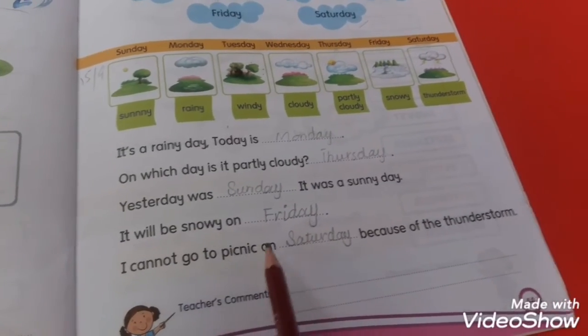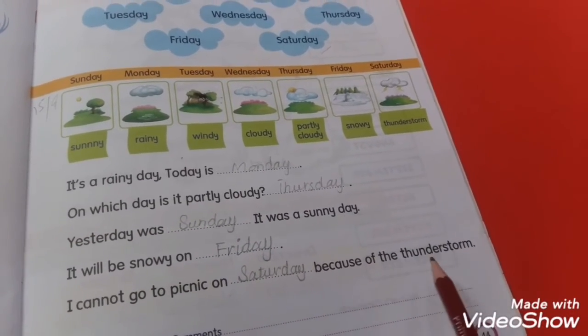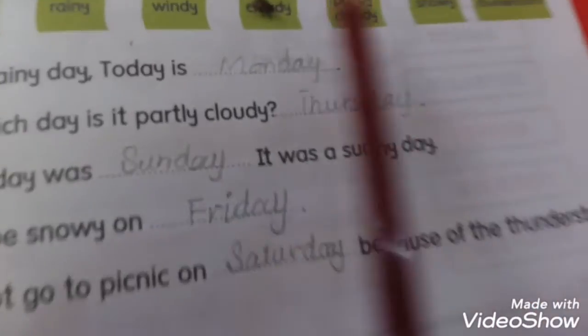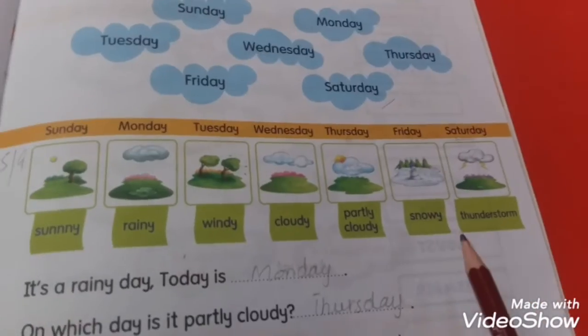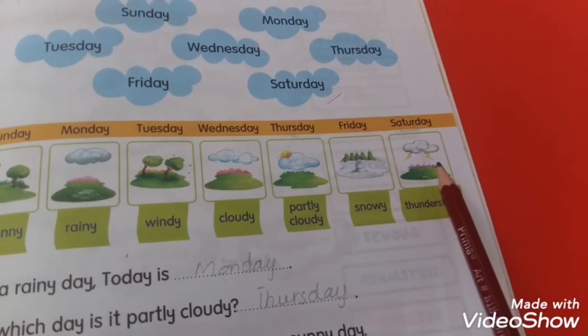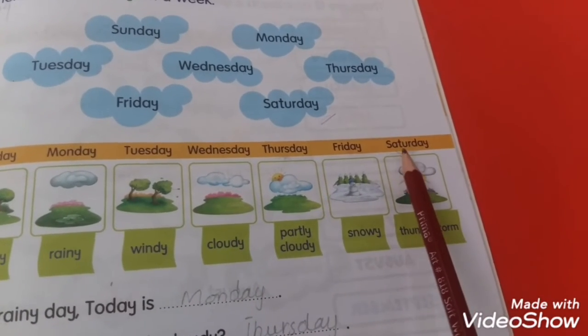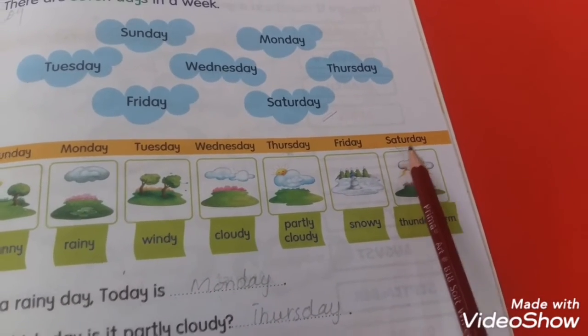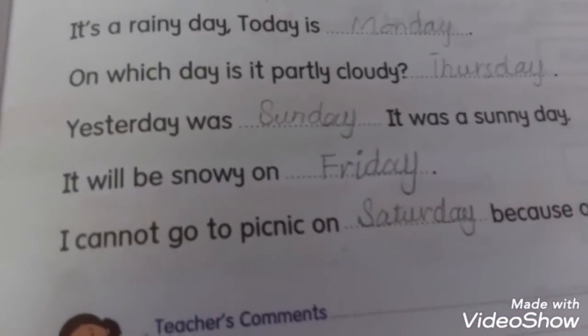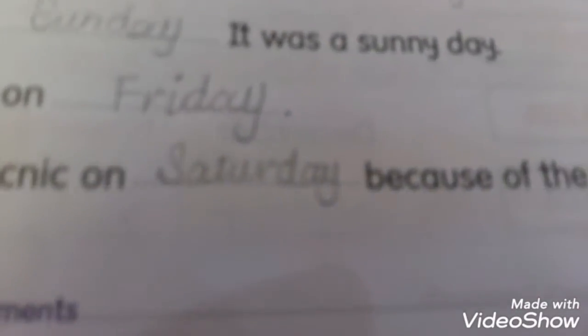I cannot go to picnic on dash because of the thunderstorm. Look at the weather symbol — this is the weather of thunderstorm. Saturday. I cannot go to picnic on Saturday because of the thunderstorm.